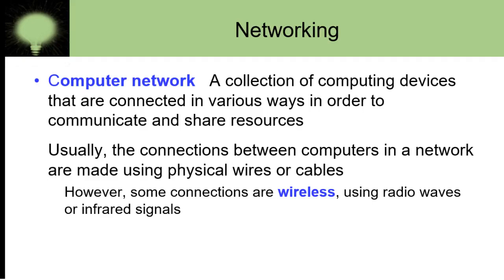When two or more devices are connected together for communication and for sharing data and resources, it is called a computer network. This connection between two computers can be made with the help of wires or wirelessly. Wires means cables — physical wires or cables. Some connections can also be wireless; nowadays we use Wi-Fi.